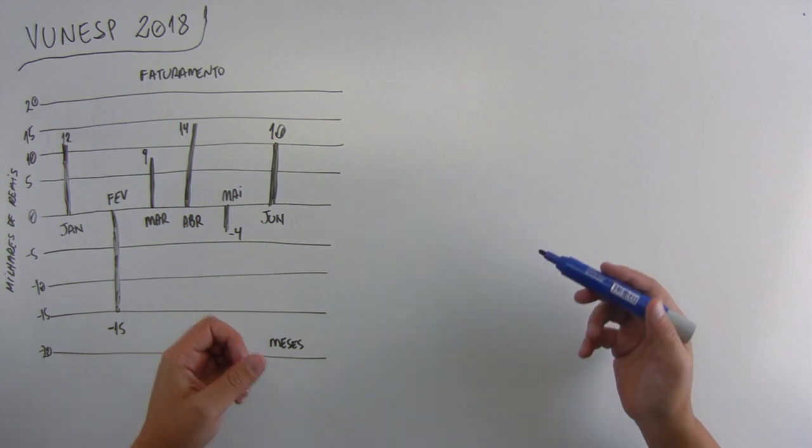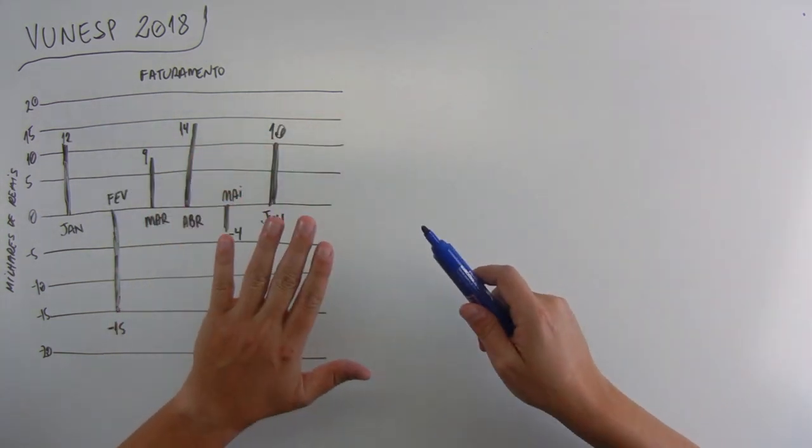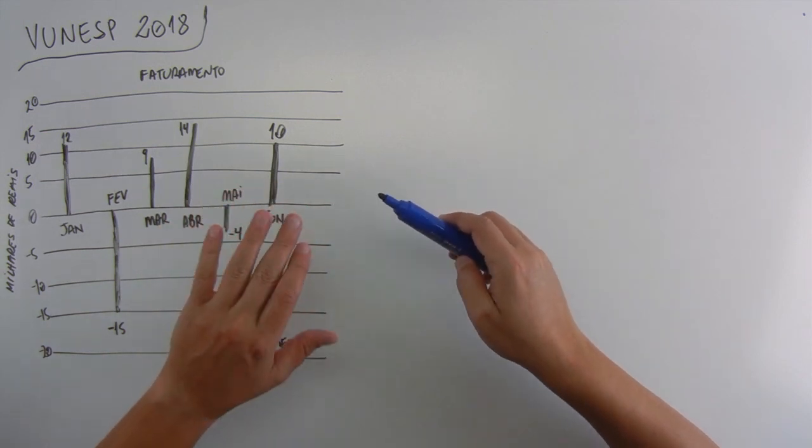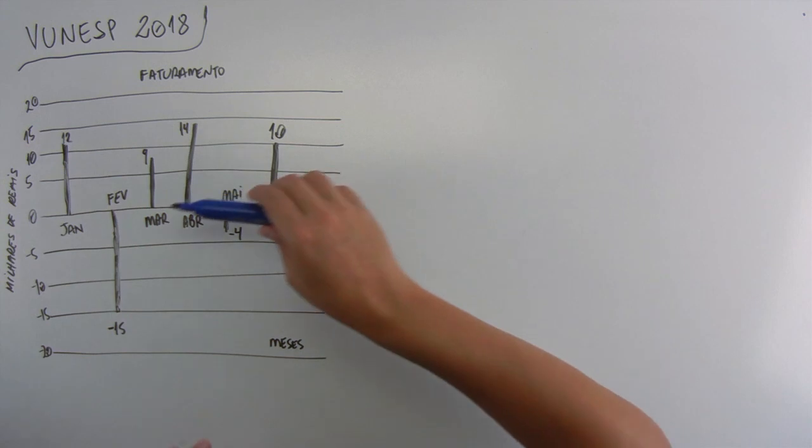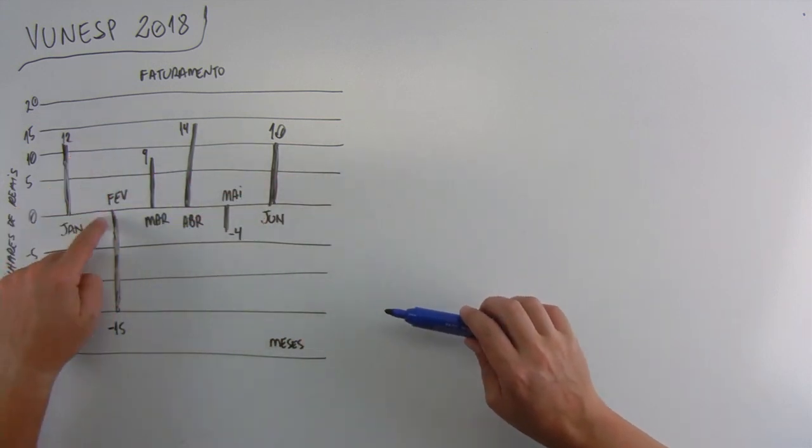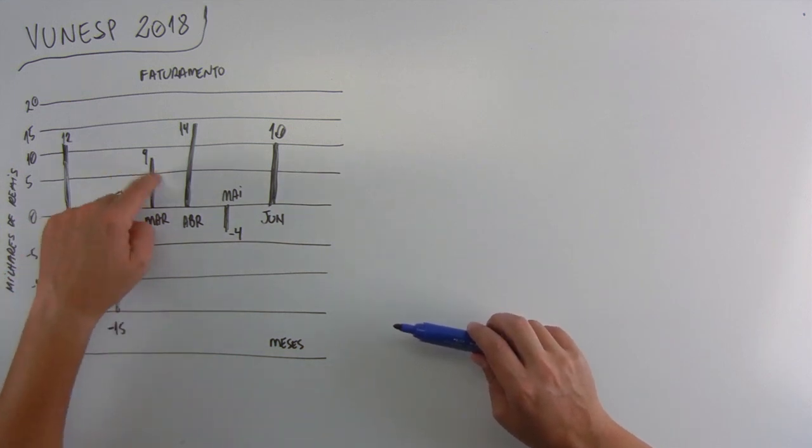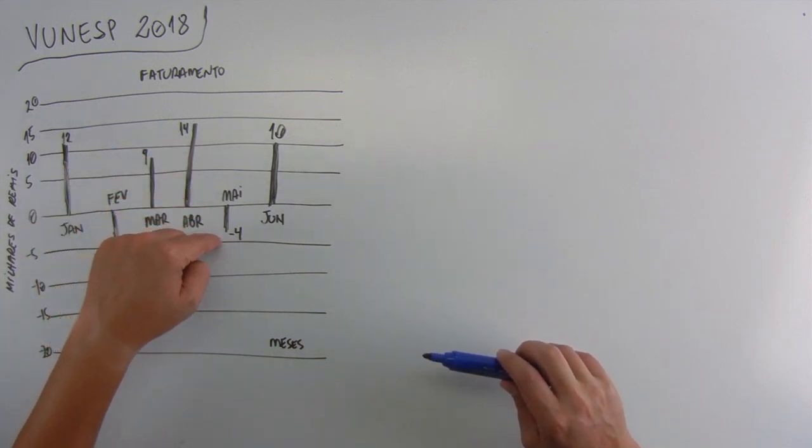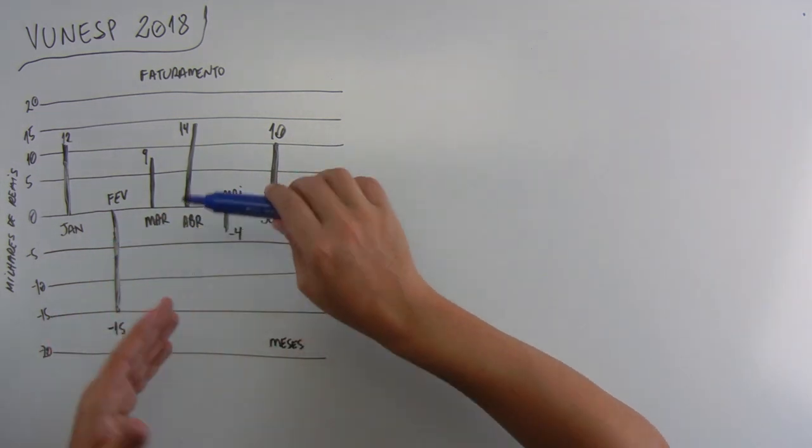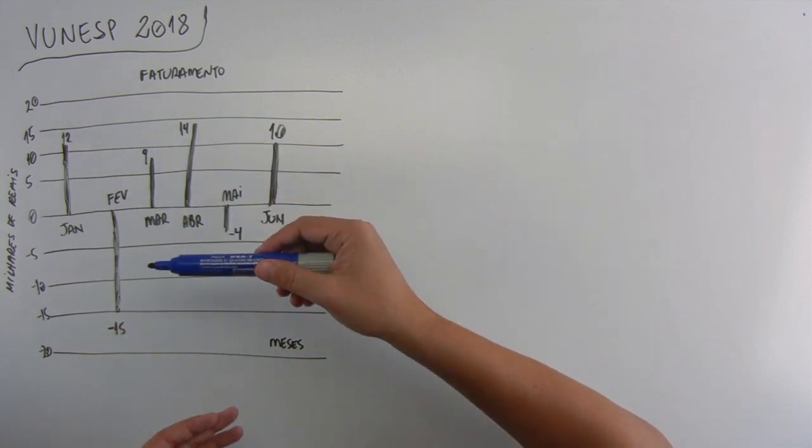E aí, conseguiu resolver essa questão? Demora mais para desenhar o gráfico do que para a gente resolver. O gráfico apresenta o faturamento mensal de uma empresa no primeiro semestre. Em janeiro foi 12 mil, em fevereiro foi negativo de menos 15 mil, em março positivo, abril positivo, maio negativo e assim por diante. Analisando esse gráfico, a gente consegue ver quando foi positivo e quando foi negativo.